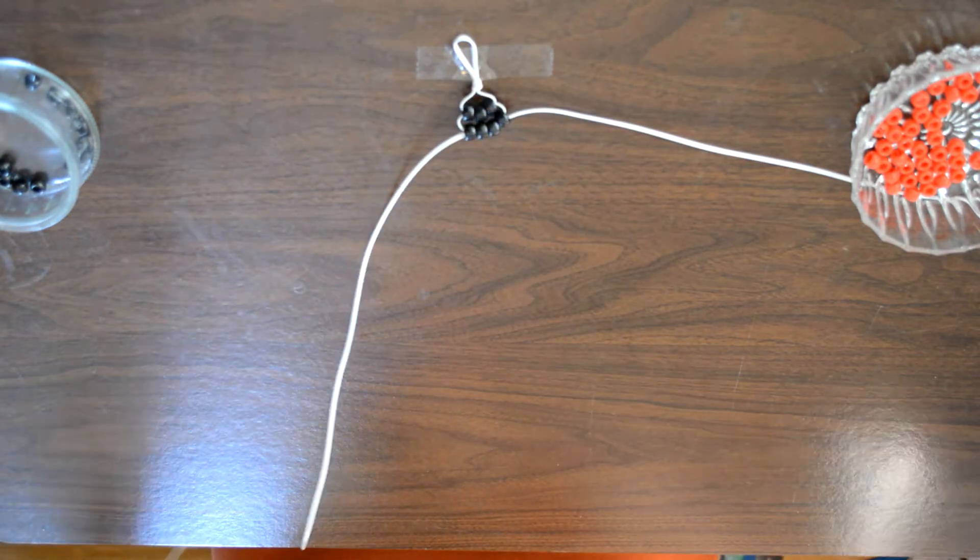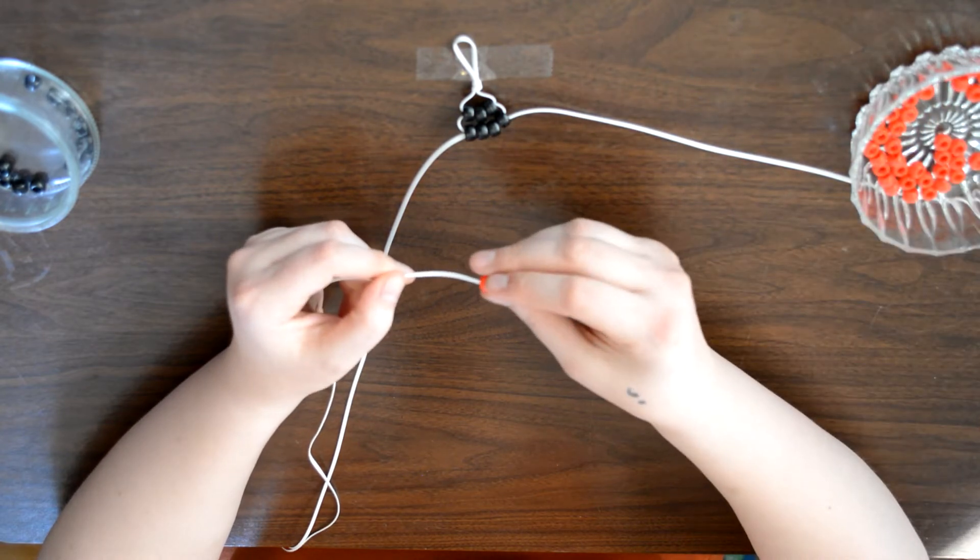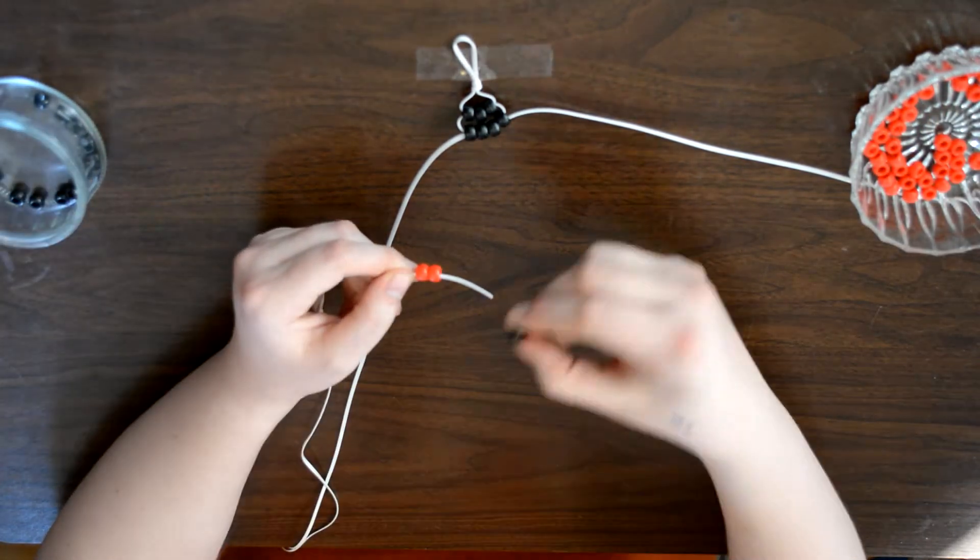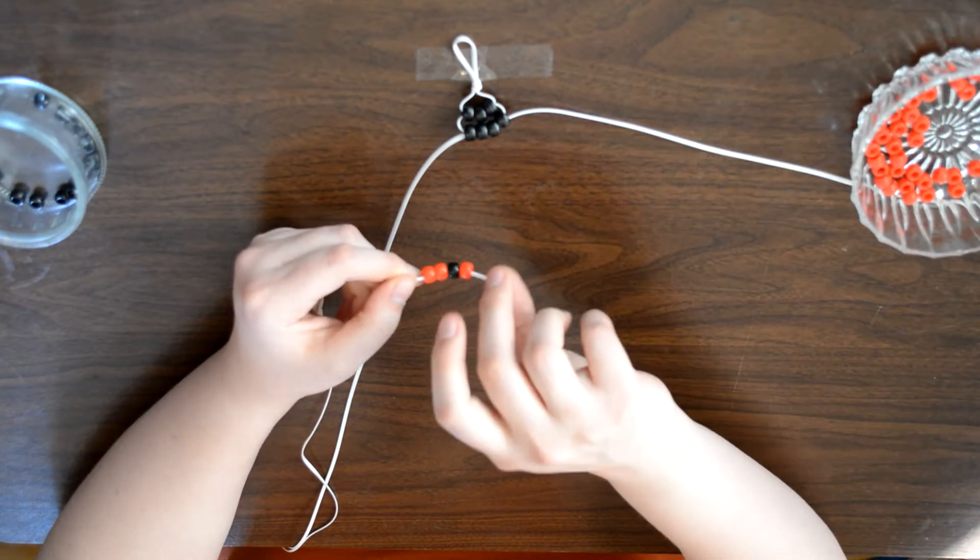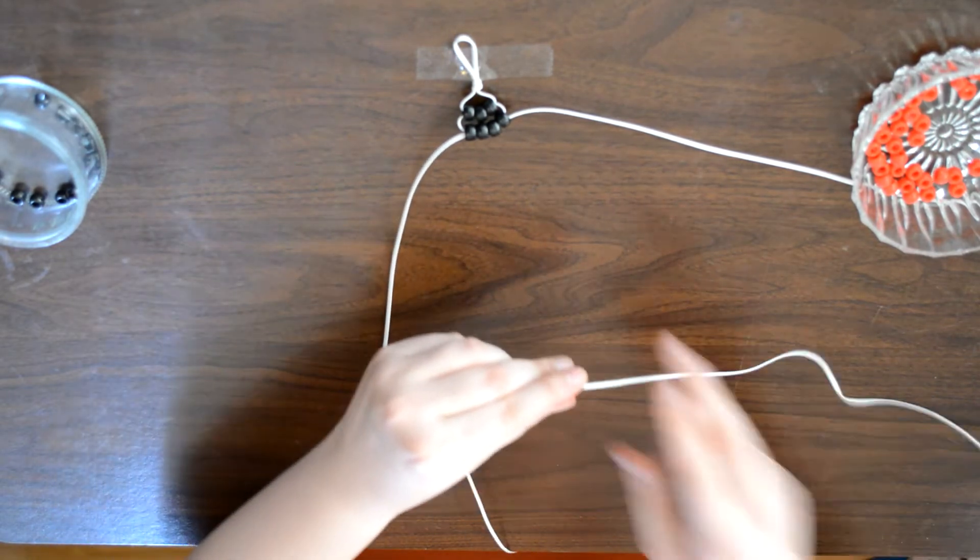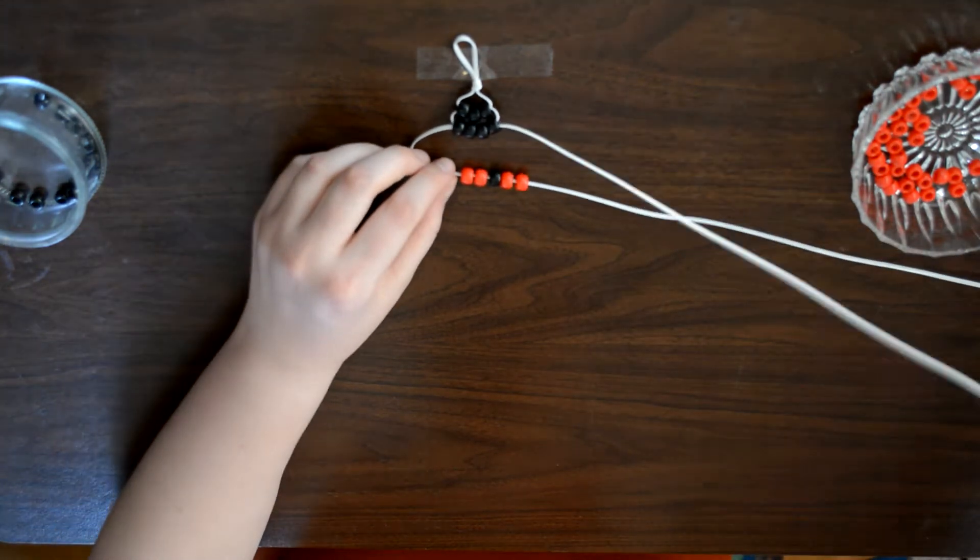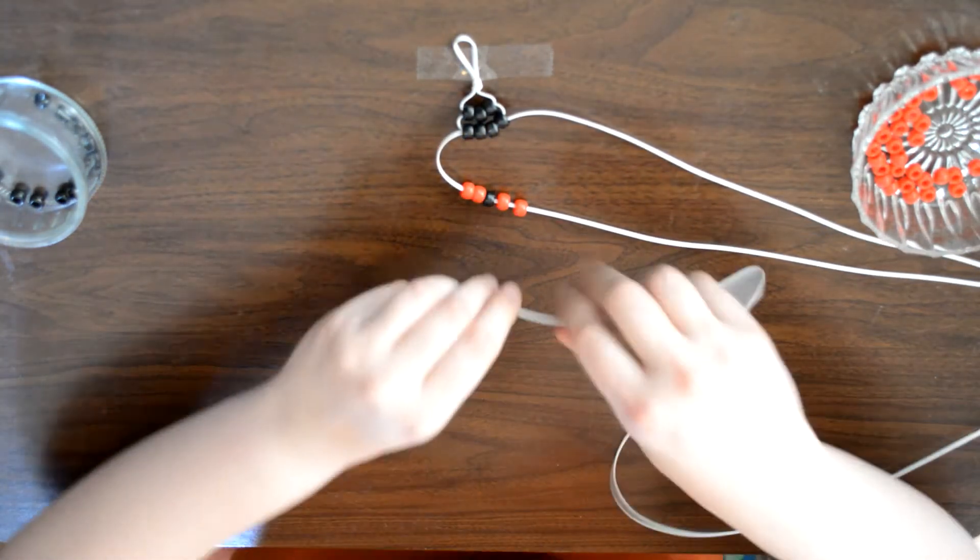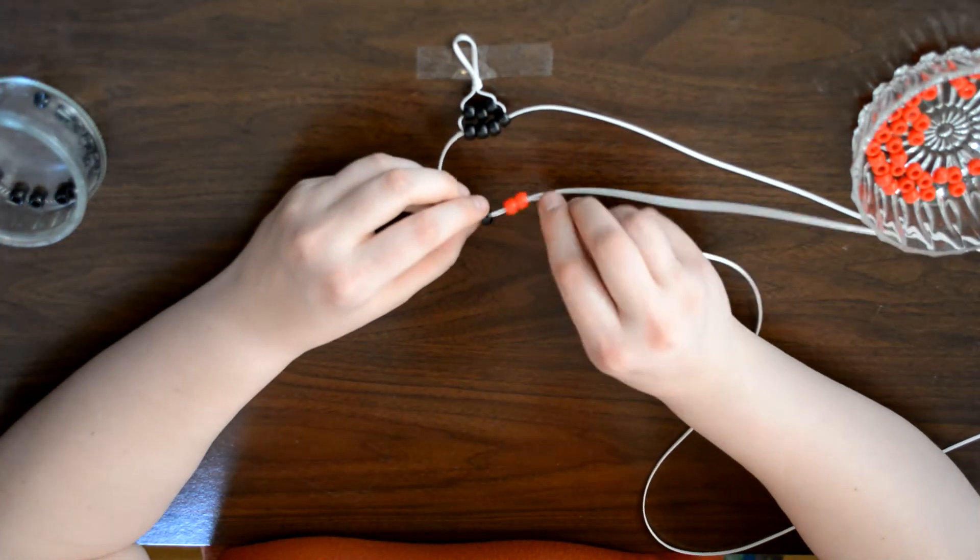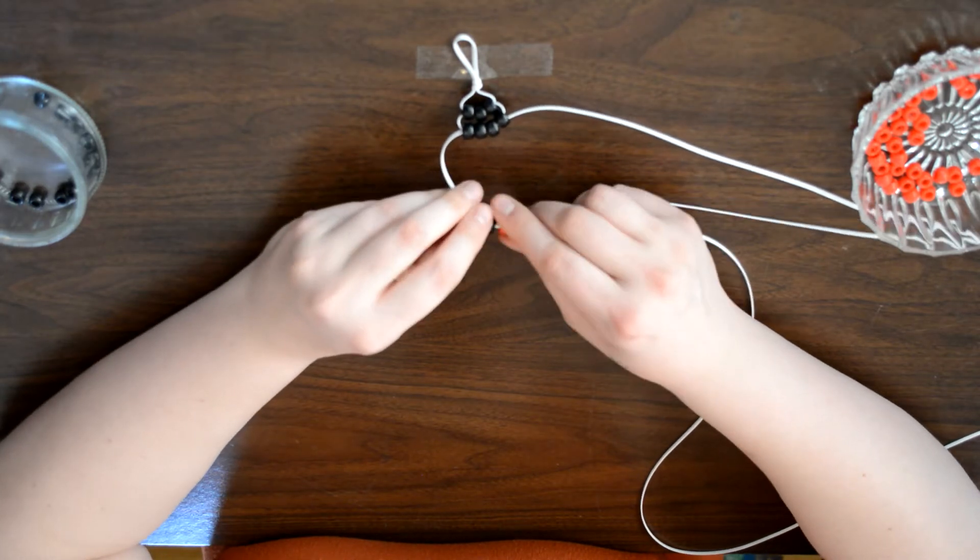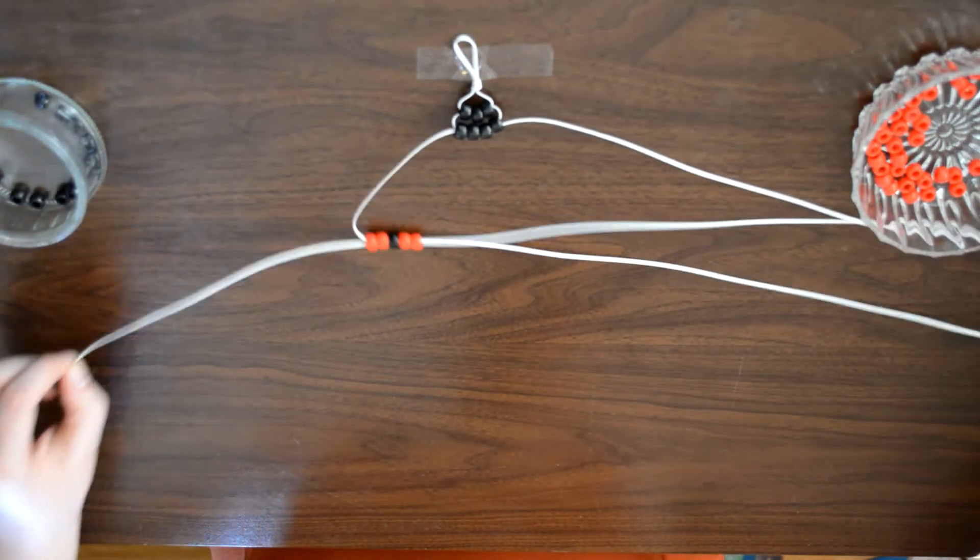So next is where we get into some more pattern work. Our third row we need two red, one black, and two red. Remember on the left side, bring this to the top. Take our right side and go from right to left through all of these beads back the other way.